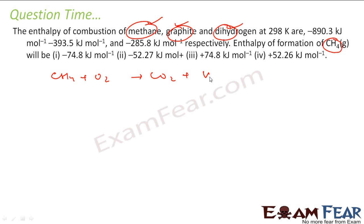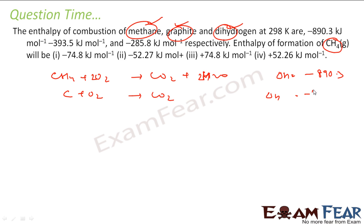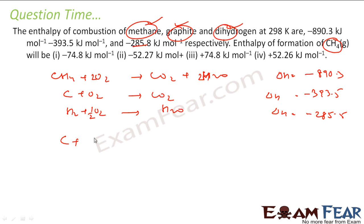Write the combustion reactions. CH4 + 2O2 → CO2 + 2H2O, delta H = −890.3 kJ/mol. C + O2 → CO2, delta H = −393.5 kJ/mol. H2 + ½O2 → H2O, delta H = −285.5 kJ/mol. We need to combine these to form the reaction C + 2H2 → CH4.